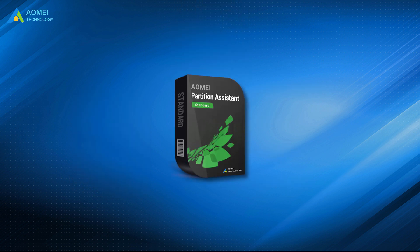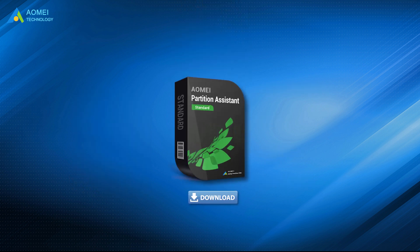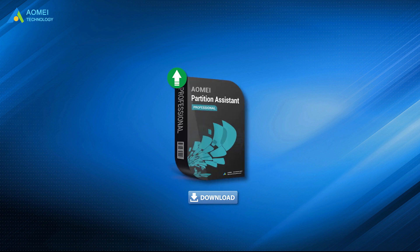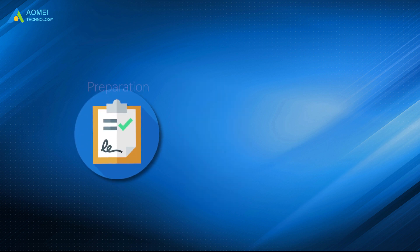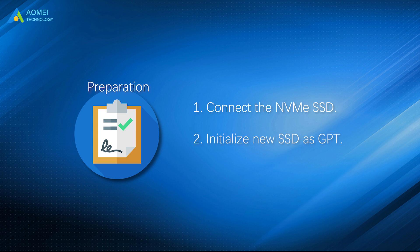You can download the free version of AOMEI Partition Assistant in the description area, then upgrade to the advanced version to clone your disk. Connect the SSD to your computer and make sure it can be detected. Initialize the new SSD as GPT partition style. Back up the target NVMe SSD if there is necessary data on it.